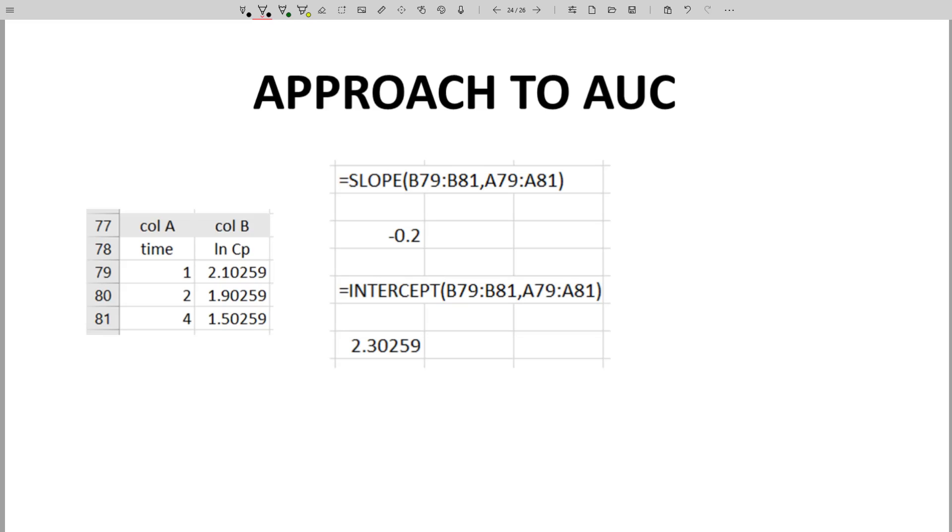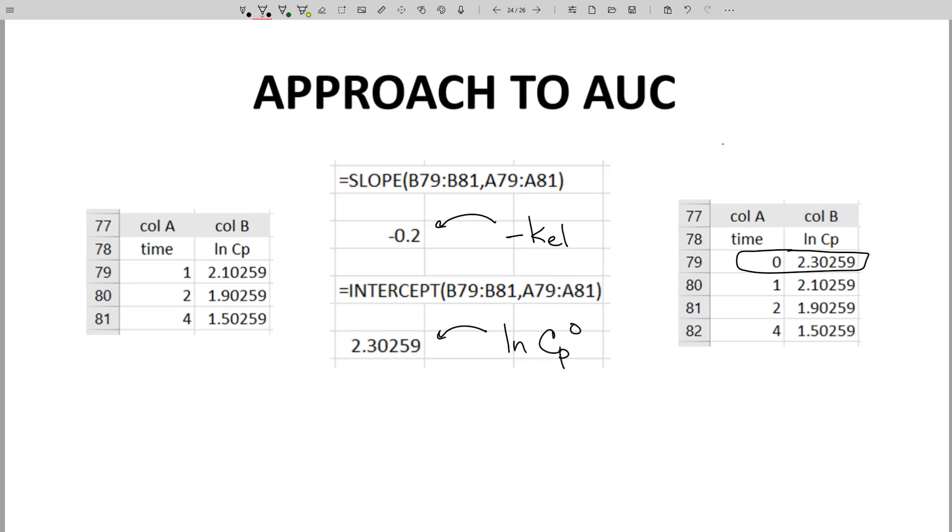From these data, we can get minus KEL with the slope function. We can also get natural log CP0 through the intercept function. That gives us a fourth data point for our y-intercept. Time zero and natural log CP equals 2.30.